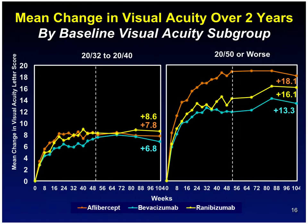In the first year, in the group with visual acuity less than 20/40, there was a statistical difference in visual gain between ranibizumab and aflibercept, with aflibercept providing a higher visual gain. However, this difference was abolished by the second year, and both drugs showed a statistically insignificant difference in final visual gain.